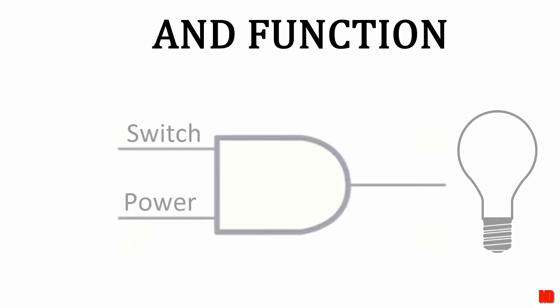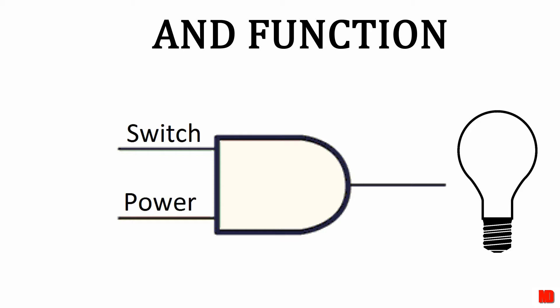For instance, let's say I want to turn on a light. The power is on is one condition and the switch is on is a second condition. The only way the light can be on is if both conditions are true. The power is on and the switch is on. Otherwise, the light is off.